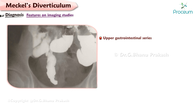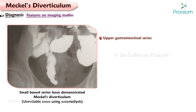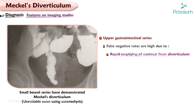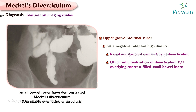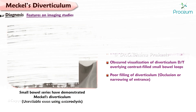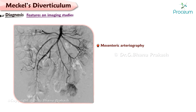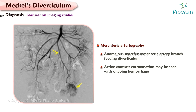Upper Gastrointestinal Series: small bowel series have demonstrated Meckel's Diverticulum but are unreliable, even using enteroclysis in experienced hands. False negative rates are high due to rapid emptying of contrast from the diverticulum, obscured visualization due to overlying contrast-filled small bowel loops, poor filling of the diverticulum, and occlusion or narrowing of the entrance. Mesenteric Arteriography: diagnosis is based on finding an anomalous superior mesenteric artery branch feeding the diverticulum. Active contrast extravasation may be seen in patients with ongoing hemorrhage.